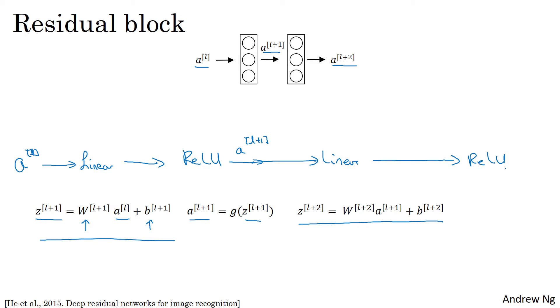And then finally, you apply another ReLU operation, which is now governed by that equation, where G here would be the ReLU nonlinearity, and this gives you AL plus two. So in other words, for information from AL to flow to AL plus two, it needs to go through all of these steps, which I'm going to call the main path of this set of layers.